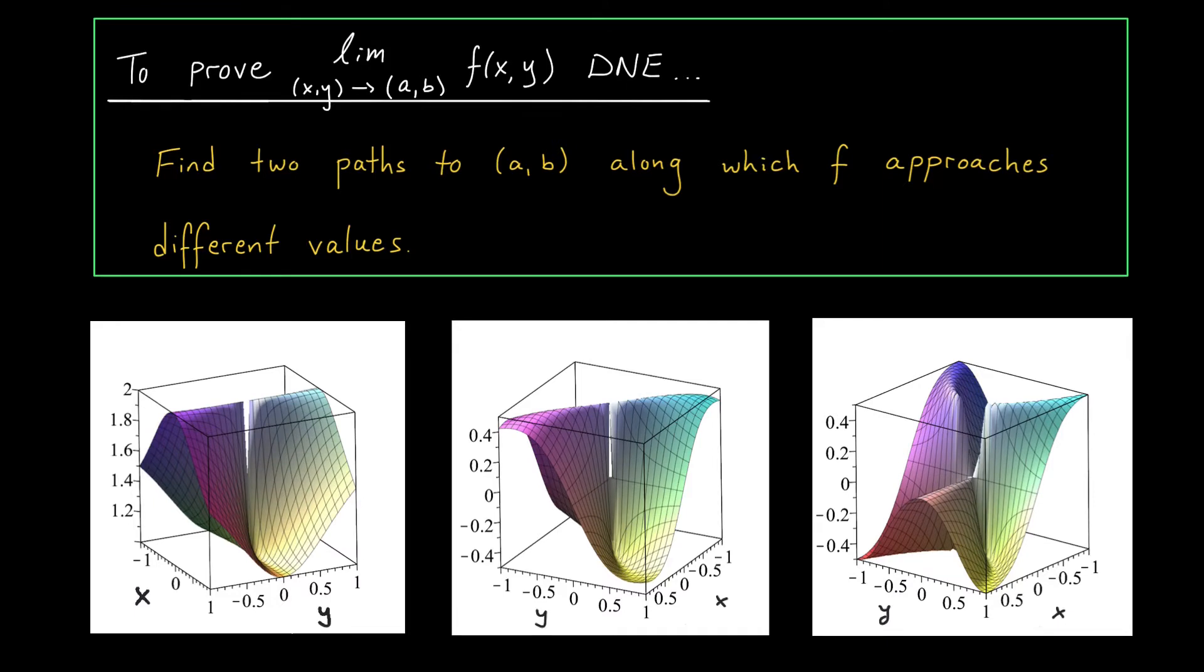We have a couple different strategies for dealing with multivariate limits in practice. I'll first discuss our strategy for proving that a limit does not exist. Recall that the definition of a limit didn't mention anything about how our inputs approach AB. This means that if a limit exists, our function should approach the same value along every curve leading to AB. So what would it mean if we happened to find two curves leading to AB along which the function approaches different values? I guess it would mean that the limit is not unique, and therefore our limit at AB must not exist. So to show that a limit doesn't exist, we can try to exhibit two different paths to AB where the function approaches different values.